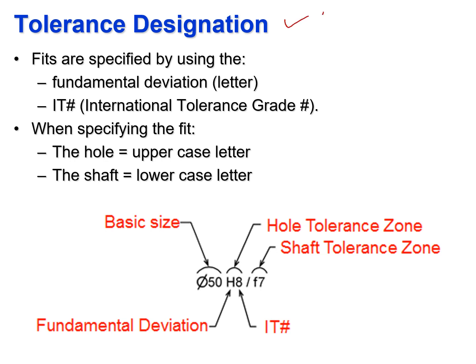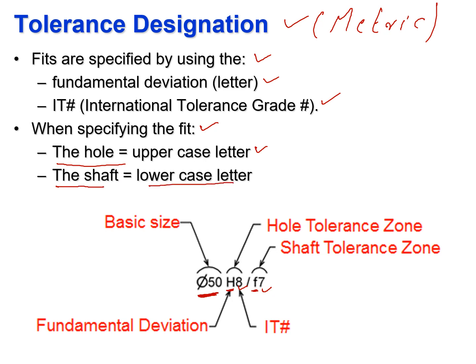The tolerance designation for the metric system contains the following: fits are specified using the fundamental deviation letter and the IT international tolerance grade for the hole, and the fundamental deviation and international tolerance grade for the shaft, along with the basic size. When specifying the fit, an uppercase letter is used for the hole — for example, H is an uppercase letter — and a lowercase letter is used for the shaft — for example, f is the lowercase letter.